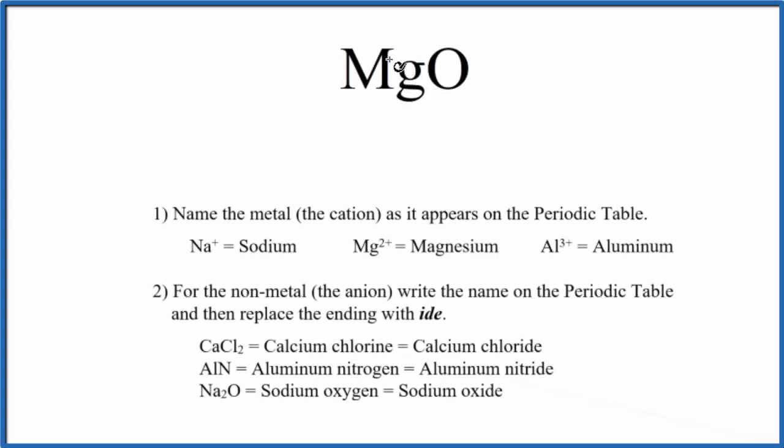To write the name for MgO, we first need to realize that we have an ionic compound. That's because we have a metal bonded to a nonmetal. Metal and nonmetal, that's an ionic compound.